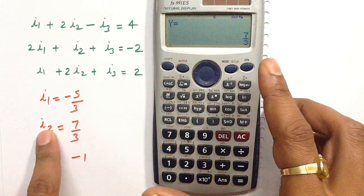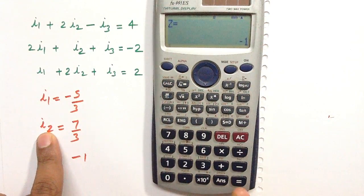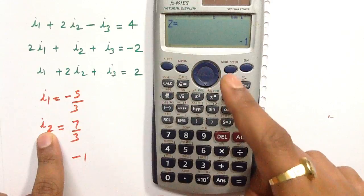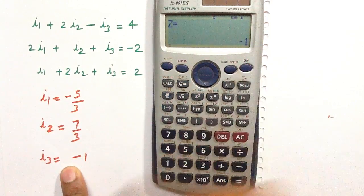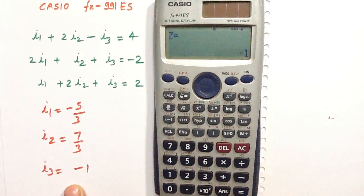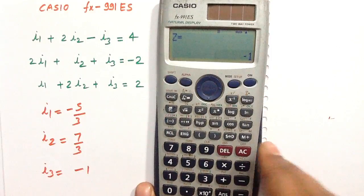The value of Y denotes the value of I2, which is 7 by 3. Press equals again to get the value of I3, which is Z equals minus 1. So in this way we can easily solve these three equations by using this calculator.